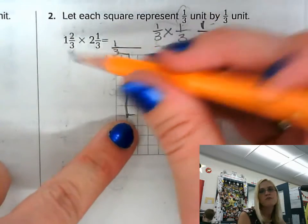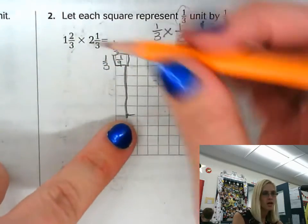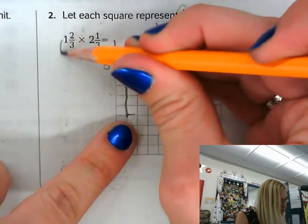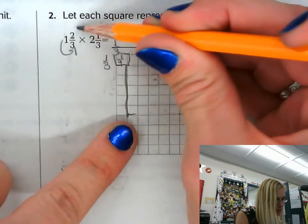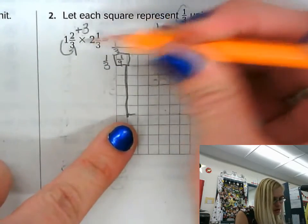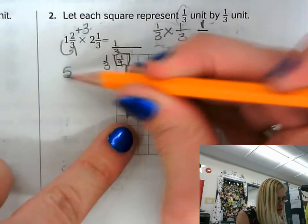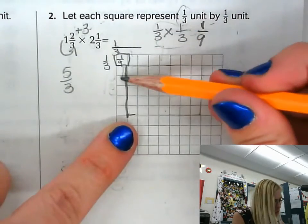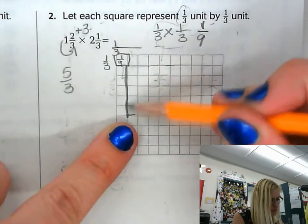which you can also see if you were to take this and convert it into an improper fraction. One times three is three. Add that to my numerator. Two plus three is five thirds, and in fact, I did go down five thirds. One, two, three, four, five.